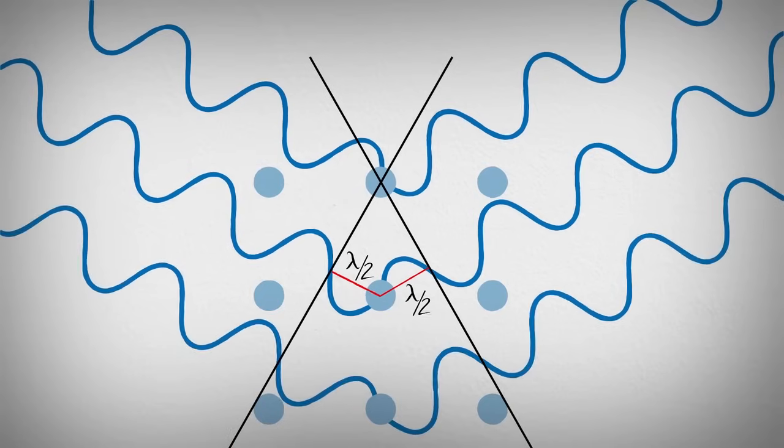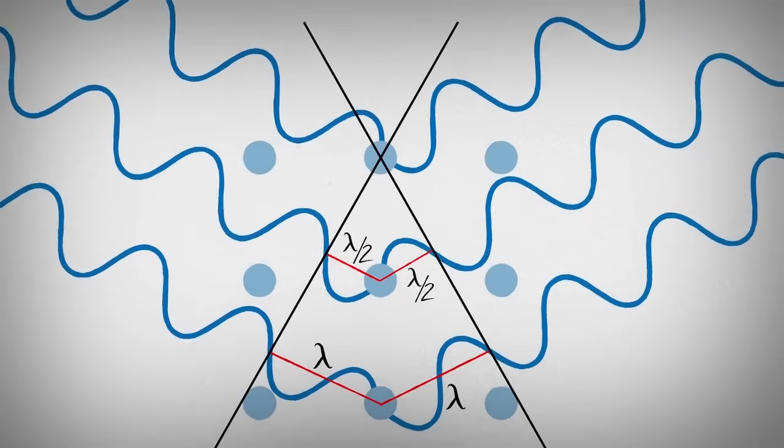In the case of the next X-ray, one wavelength is traveled on both the incident and the scattered side, resulting in two wavelengths. This reinforcement occurs throughout the crystal.